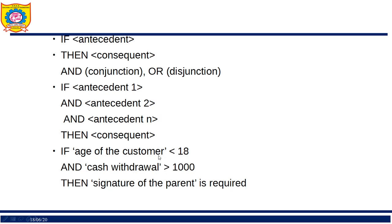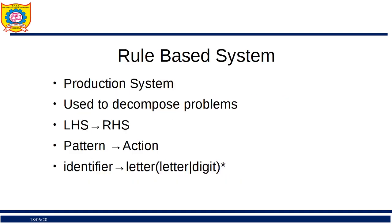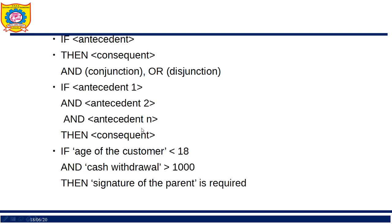Here two antecedents are joined with AND, followed by a conclusion. In order to solve a given goal, we break the requirement into a set of primitive goals that can be solved trivially. This is the essence of a rule-based system.